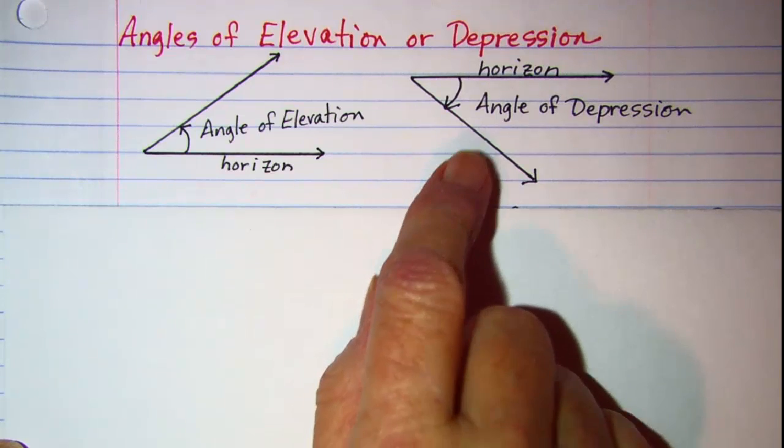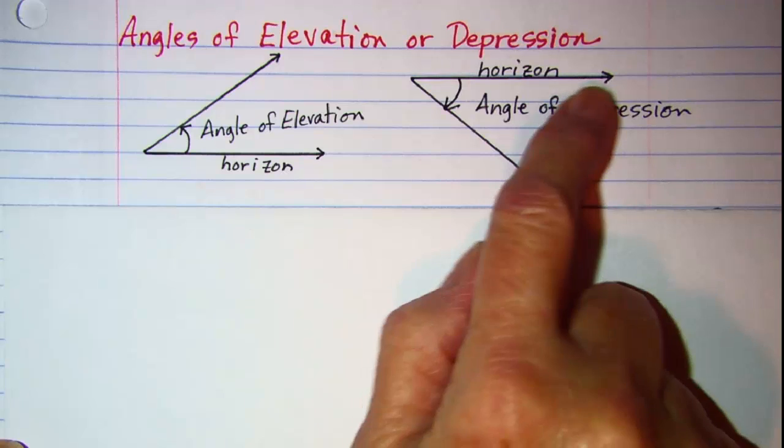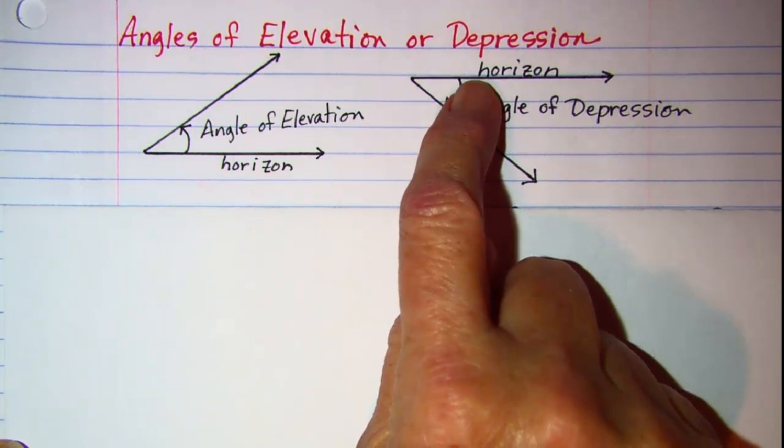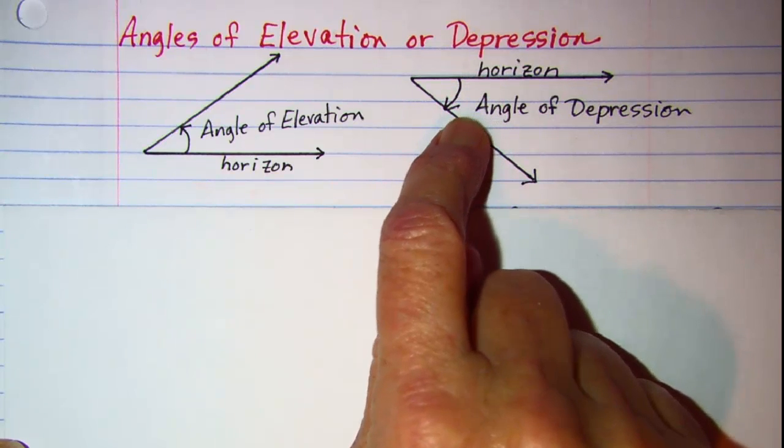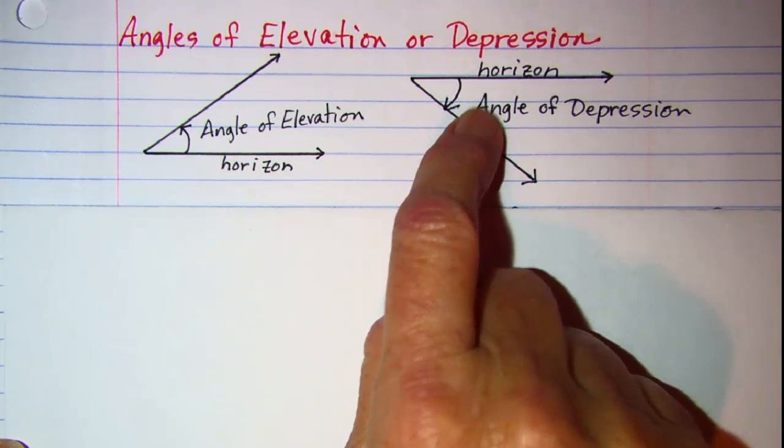When we're talking about the angle of depression, again we need the horizon which is a horizontal line, but the angle of depression is formed by moving the terminal side clockwise or going down.